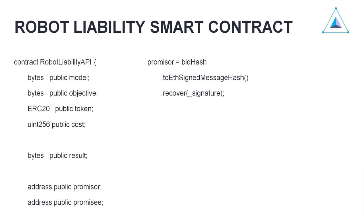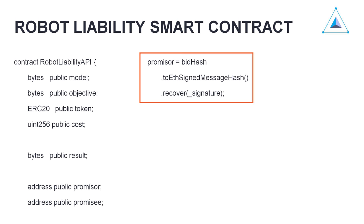The smart contract contains fields from the liability proposal, an additional field that contains the result of the work of production, and fields that describe the liability parties. We can be sure that the address is correct because we recover it from the signature of the message, and no one can commit fraud on this.